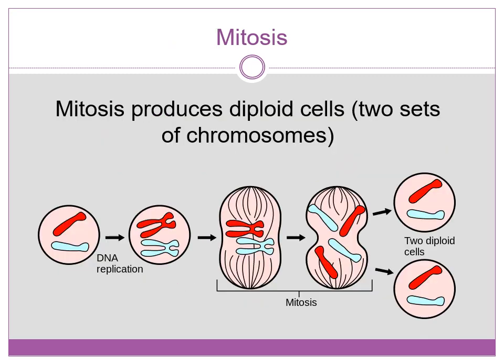Mitosis starts with a parent cell that has diploid chromosomes — two sets of chromosomes — and ends with two daughter cells that have diploid chromosomes.